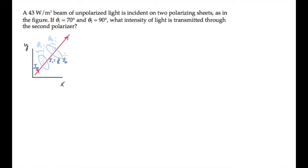When unpolarized light passes through a polarizer, half of the intensity remains and the light becomes polarized along the direction of the polarizer. So it's now polarized along theta1.